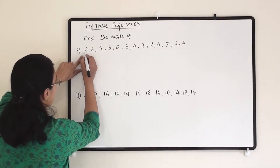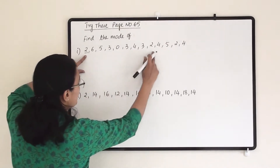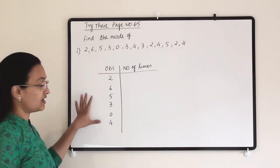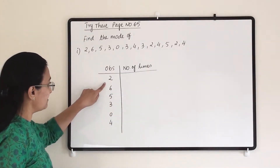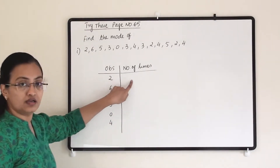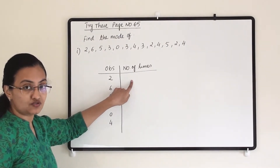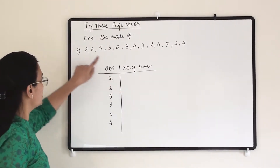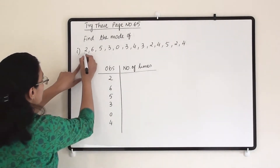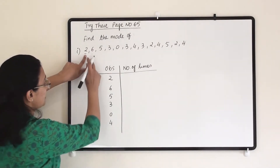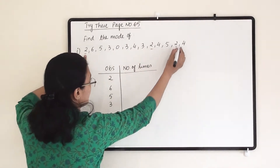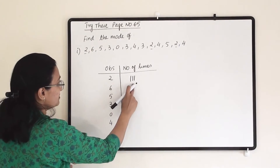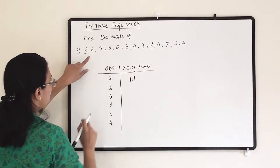First, select one number and see how many times it is coming. I have made a table in which I will represent each number as a tally mark, so it will tell me how many times that number has appeared. We are taking two first — two is appearing once, twice, and thrice. So I am writing three tally marks, which tells me two has appeared three times in all these observations.